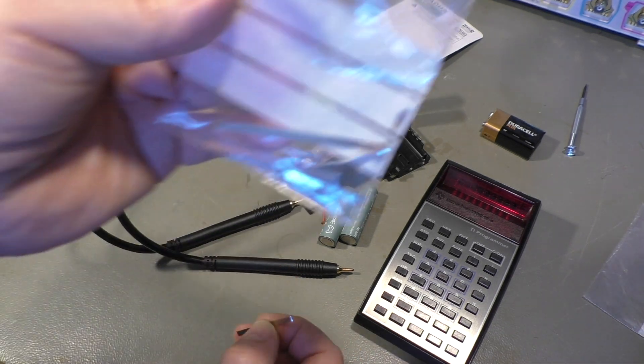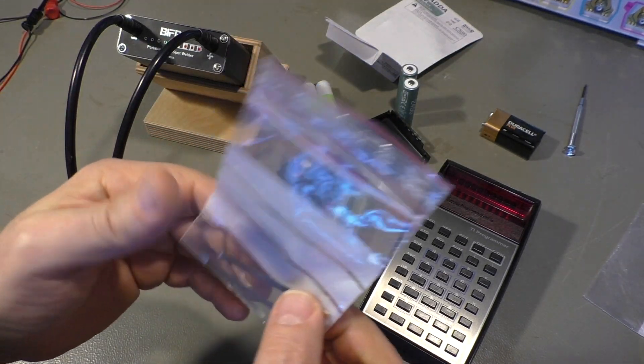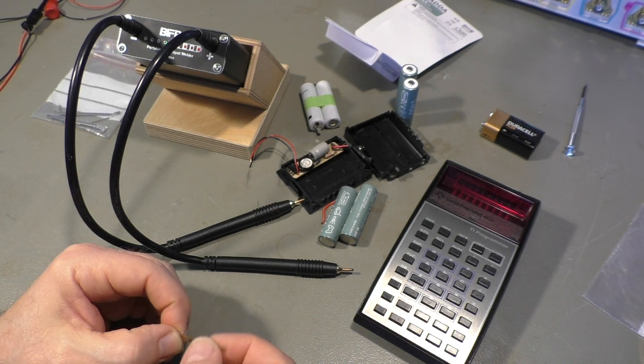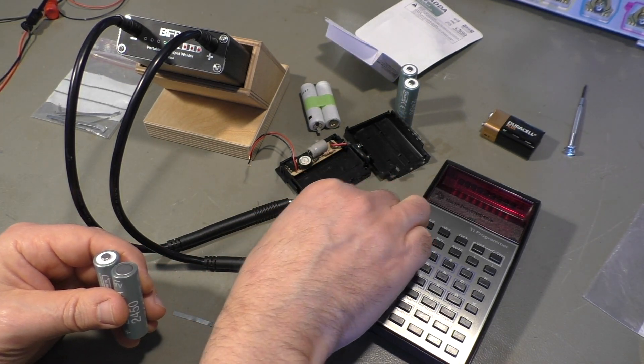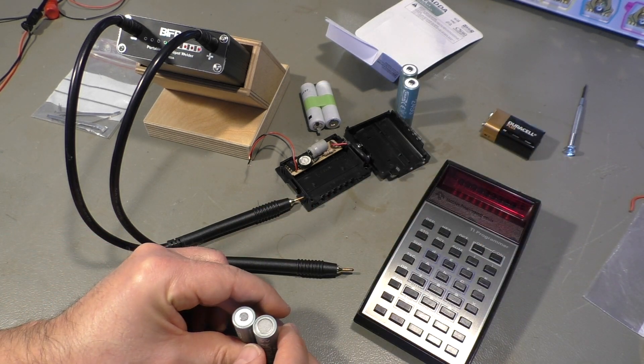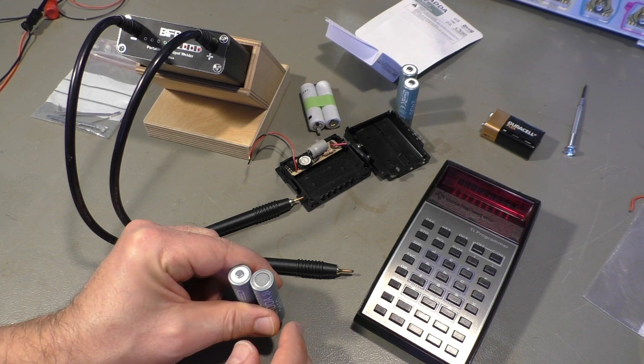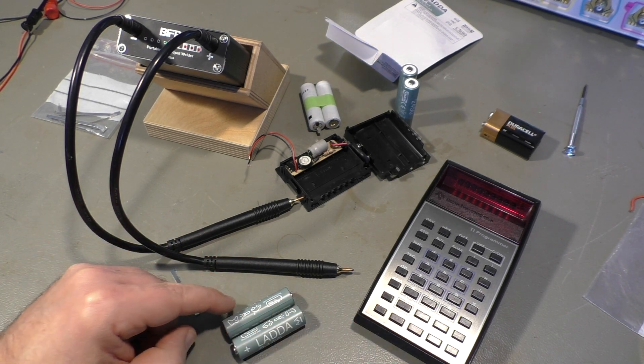By the way, these are old nickel strips from other battery packs. Sometimes they are pretty long. They make good material for creating new battery packs. So, we need two batteries in series. I think I first will glue them together with hot glue.